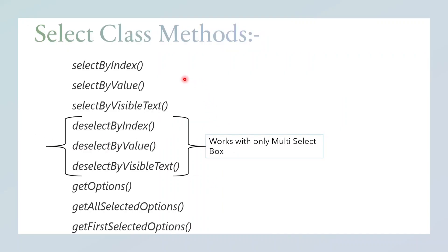There are different methods of the Select class we'll be covering — selectByIndex, selectByValue, selectByVisibleText, deselectByIndex, deselectByValue, deselectByVisibleText, getOptions, getAllSelectedOptions, and getFirstSelectedOption. The deselect methods — deselectByValue, deselectByIndex, and deselectByVisibleText — only work for the multi-select box. We will cover what a multi-select box is as well.